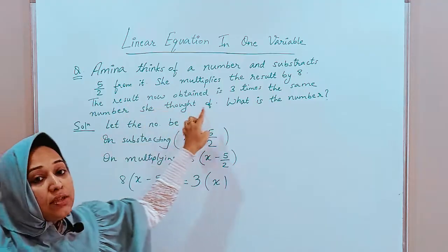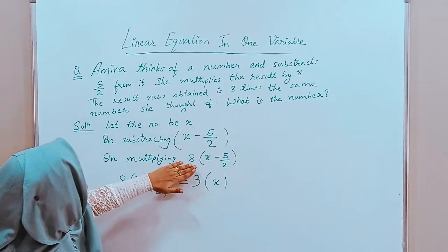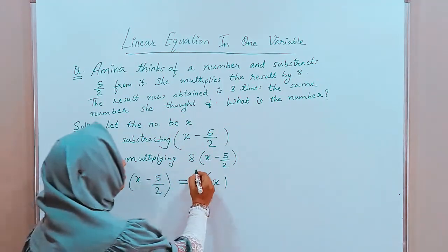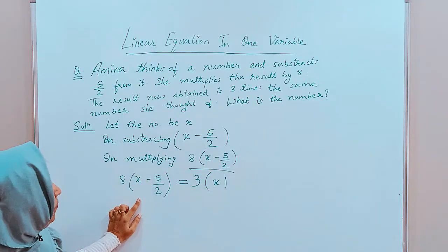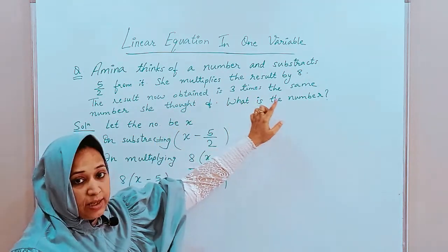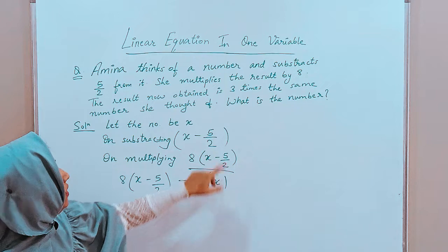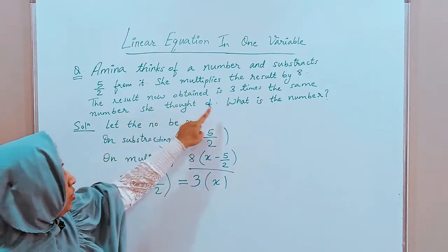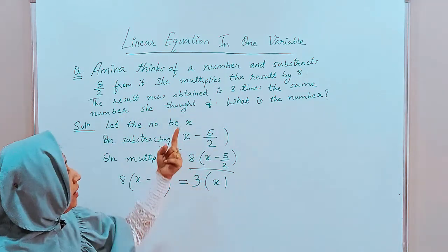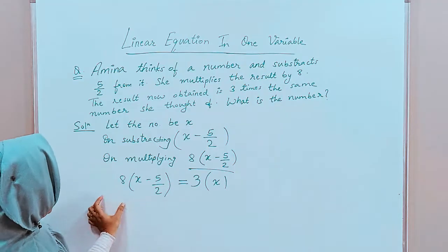Then, the result now obtained. Now, the result obtained is this, right? So, the result now obtained is 3 times, 3 times same number she thought of that is x is same means is equal to. So, this is the equation. Now, we have to solve it further. We will simplify this equation.